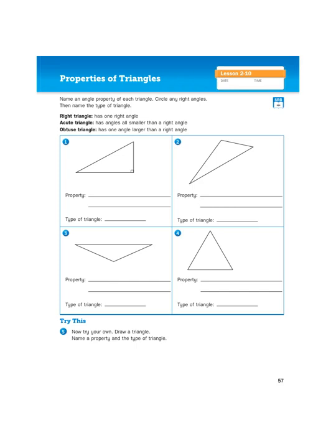Hi boys and girls, it's Mr. Wassman and today we are in Unit 2 Lesson 10 in our Math Journals, Properties of Triangles. We're on page 57 so let's get right to it.